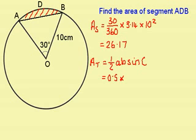So I have 0.5 times this is one side, 10 centimeters, and for the other side I also have a radius, so that's also 10 centimeters.